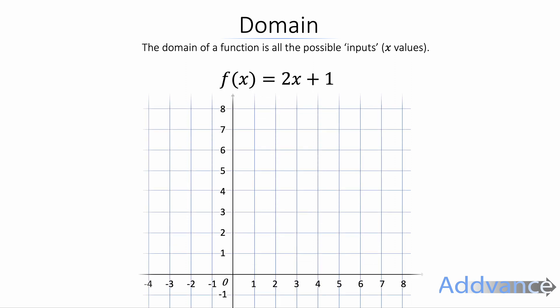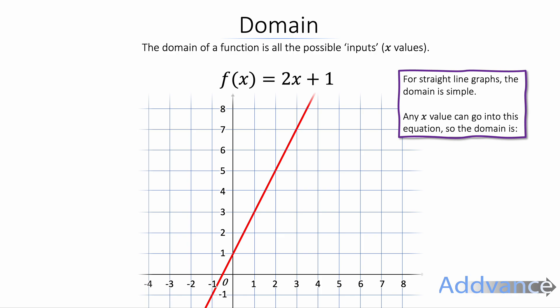Let's look at some examples of this. So here we've got the function f of x equals 2x plus 1. And this is a straight line graph. For straight line graphs the domain is simple and any real number, any number can go into this function and we get a number out. It's absolutely fine.